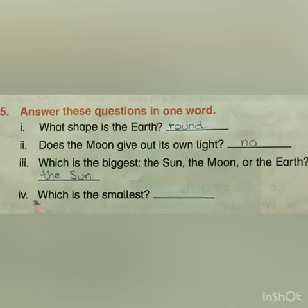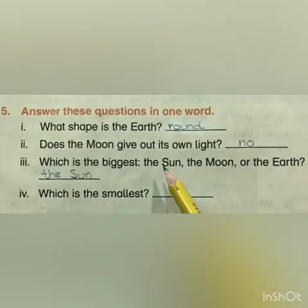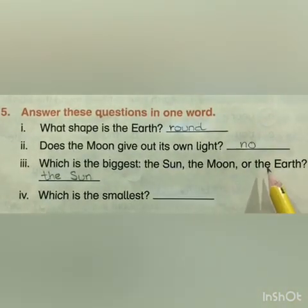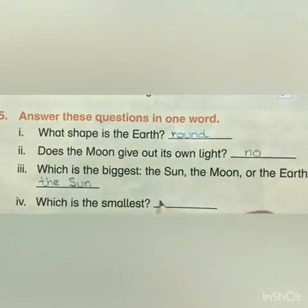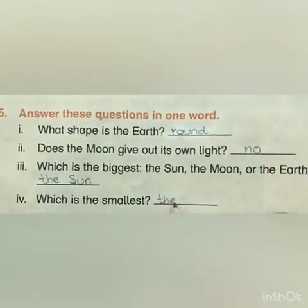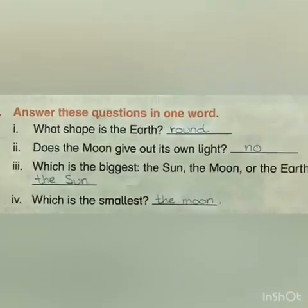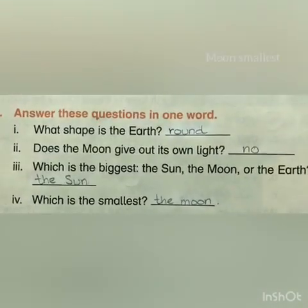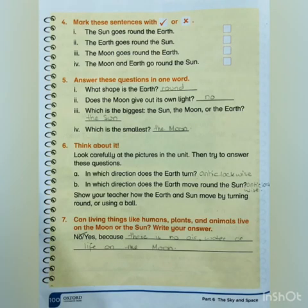Number four: which is the smallest — the sun, the moon, or the earth? The smallest is the moon. So this is it for today. Thank you.